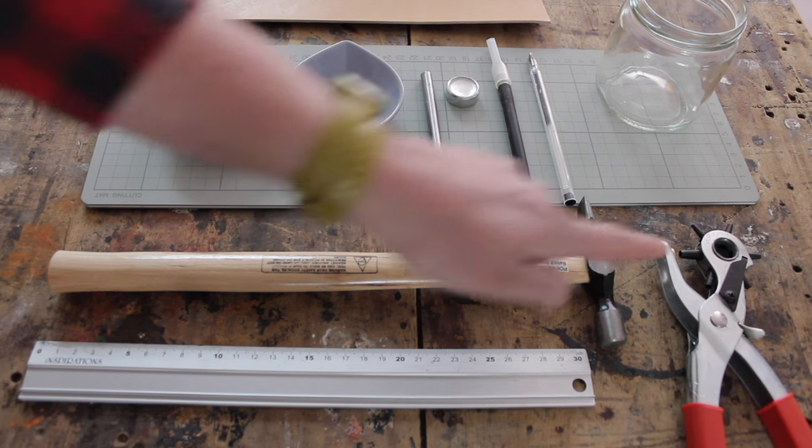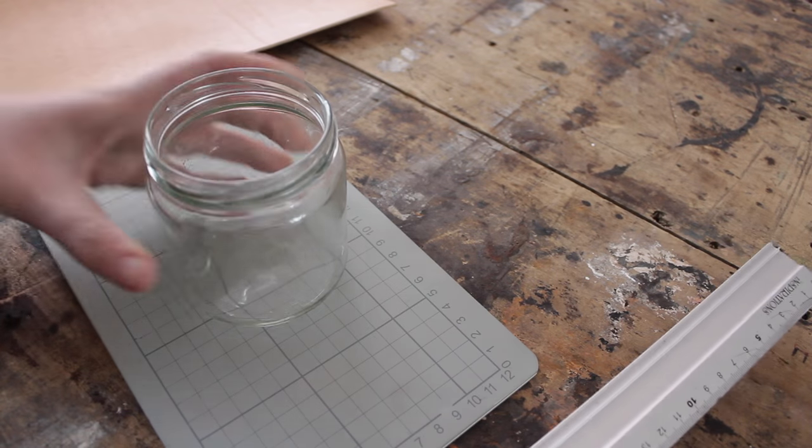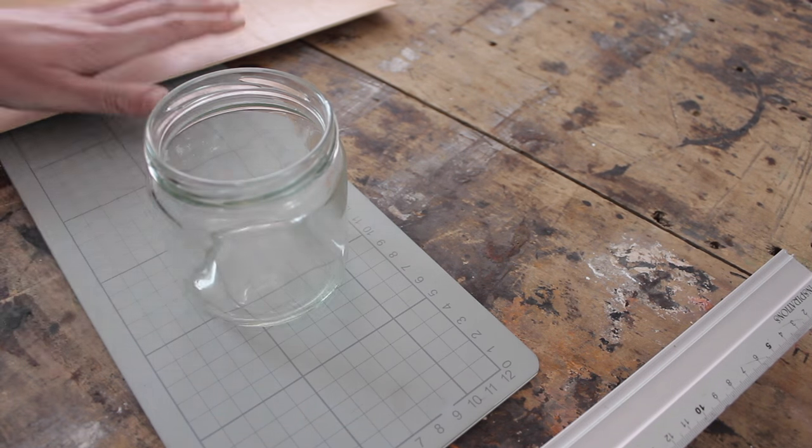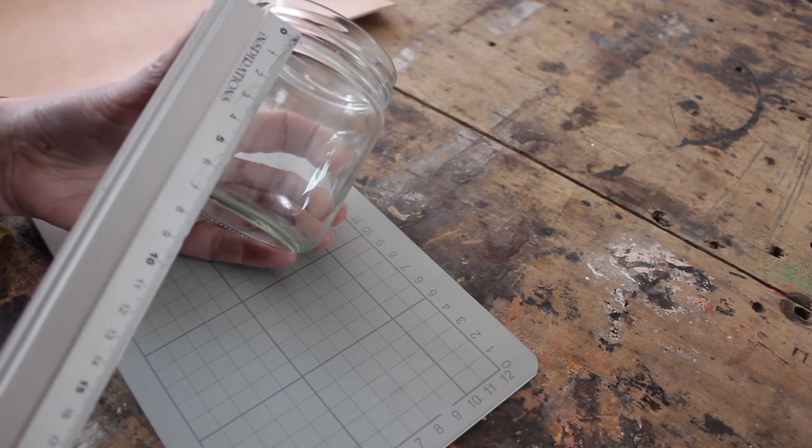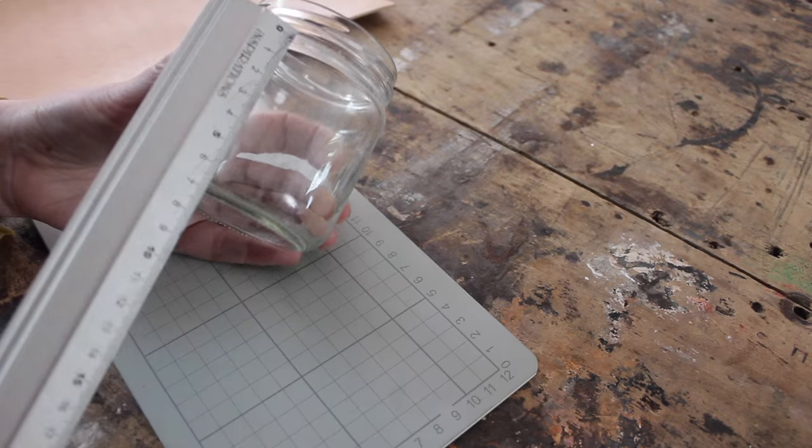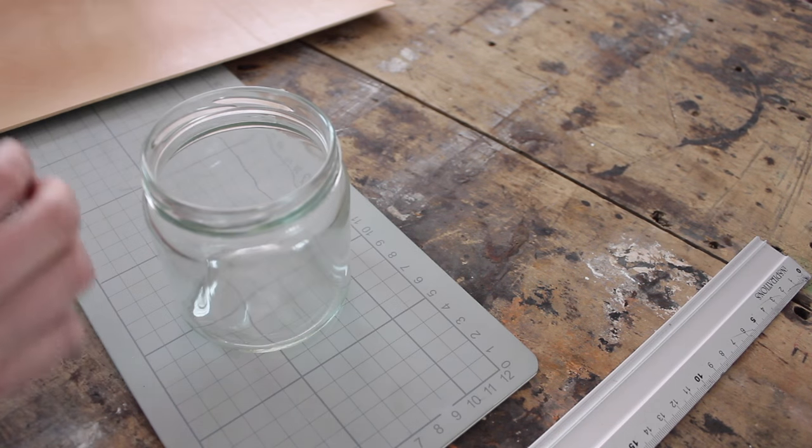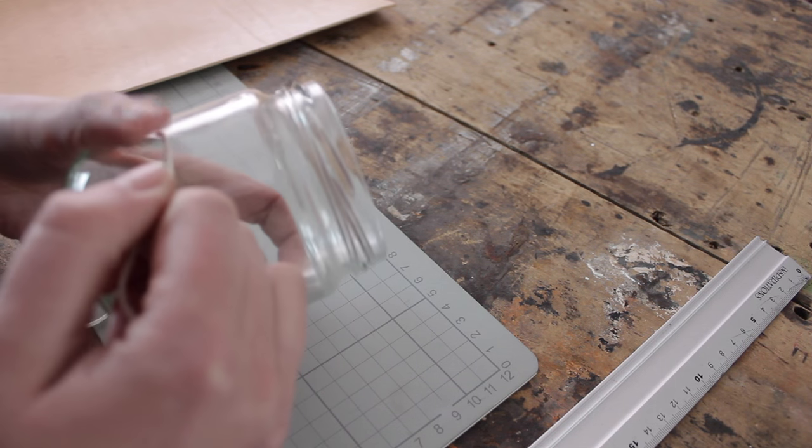We're gonna start by measuring how big your jar holder is gonna be. Mine is gonna be six centimeters high. For the diameter, just put a piece of string around your jar.